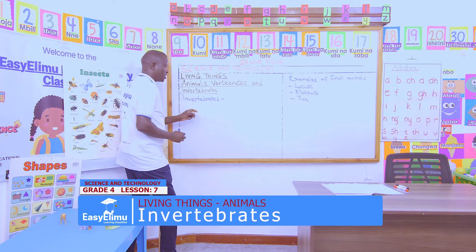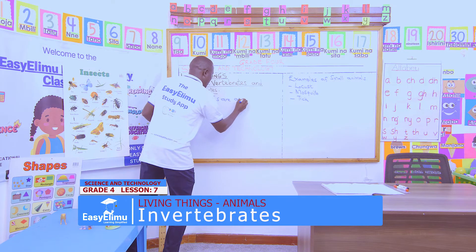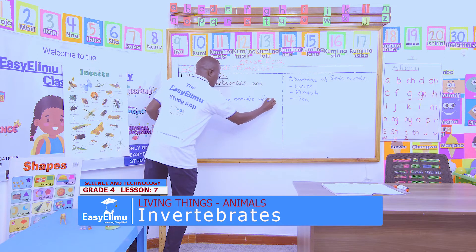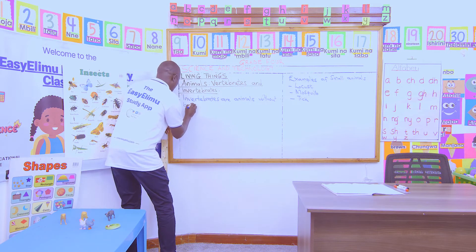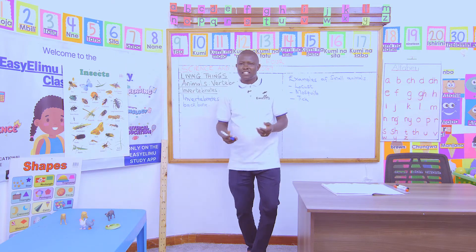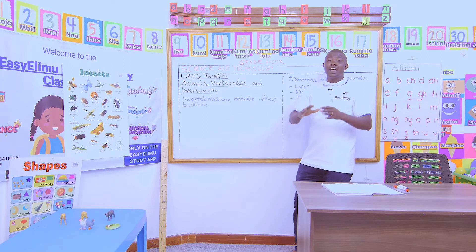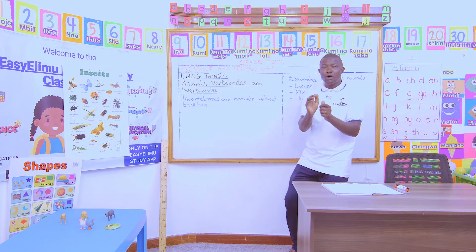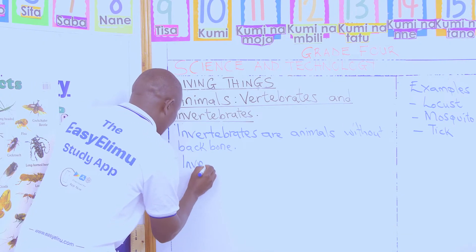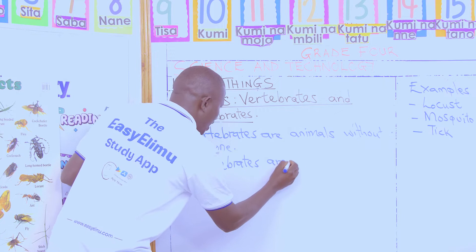Tom reads from the dictionary: invertebrates are animals without backbone. Correct! As Tom has given us, invertebrates are animals without backbones. In other words, we also say they are small animals — invertebrates are small animals.